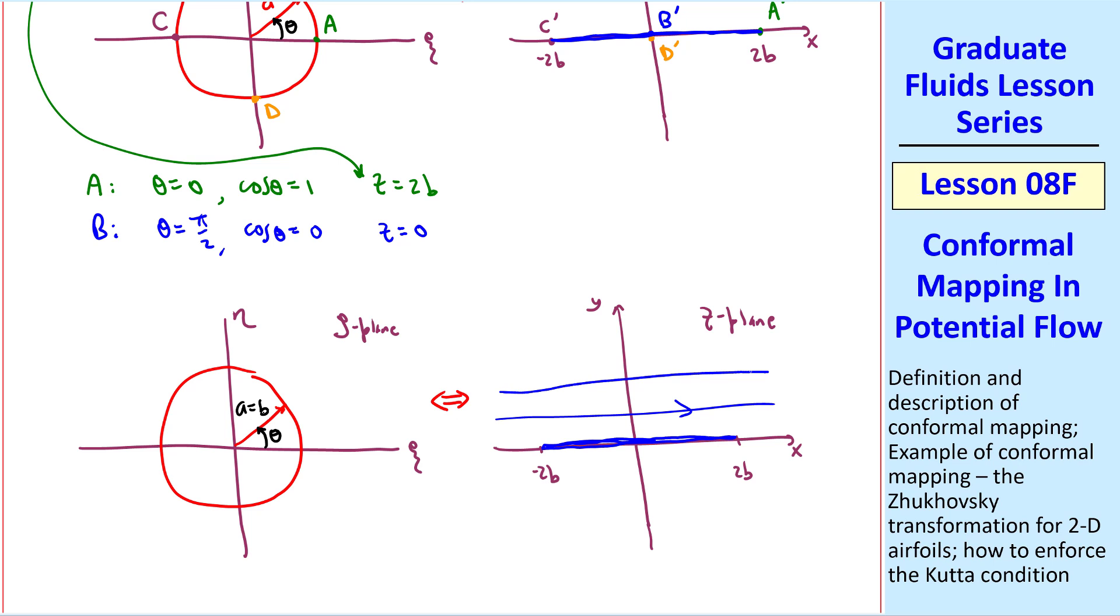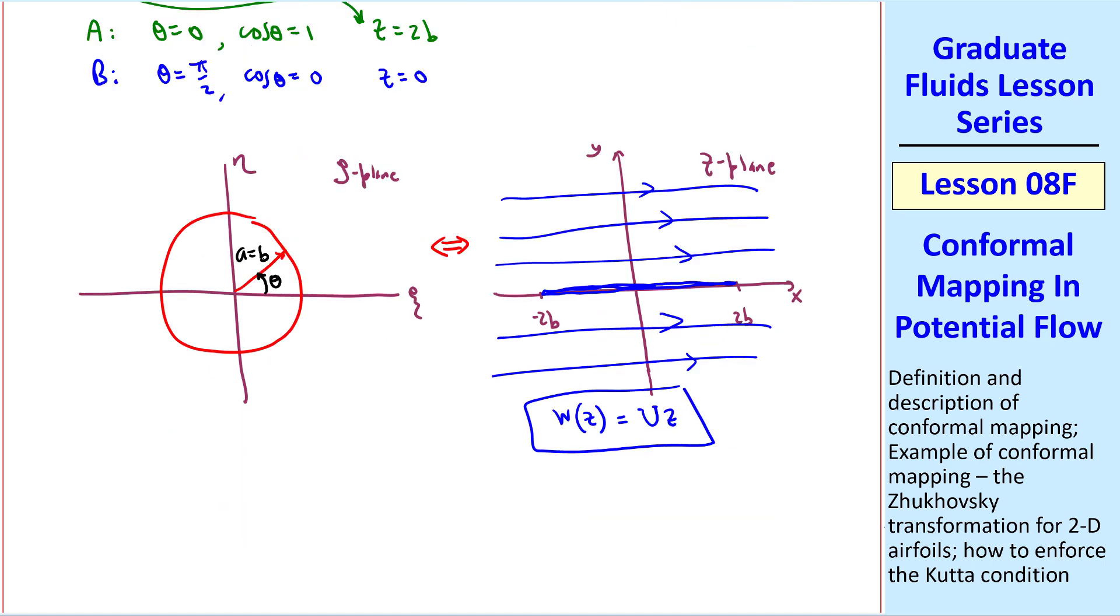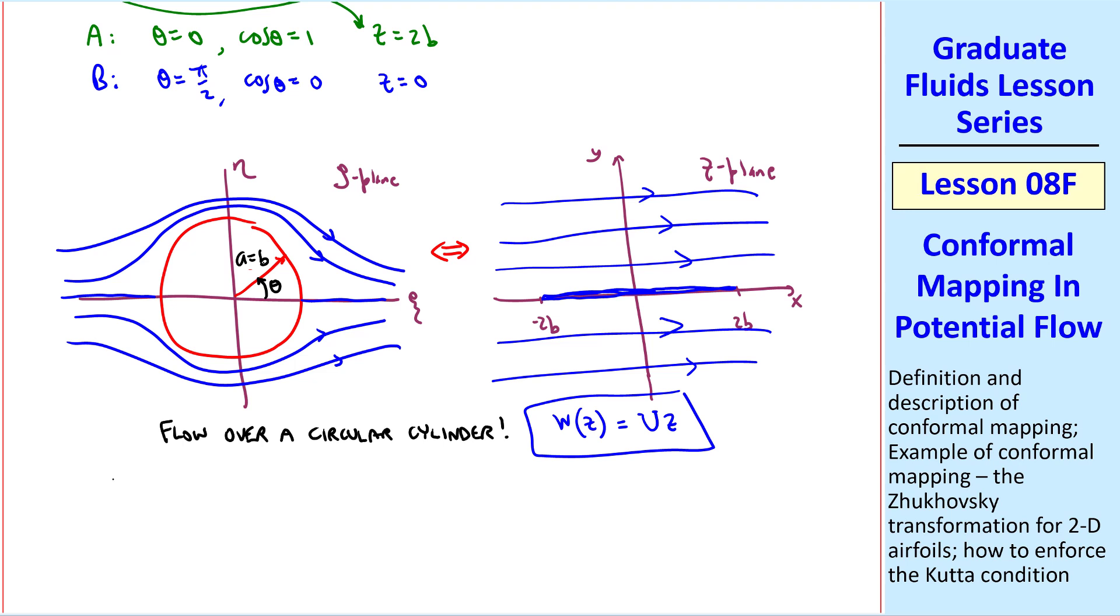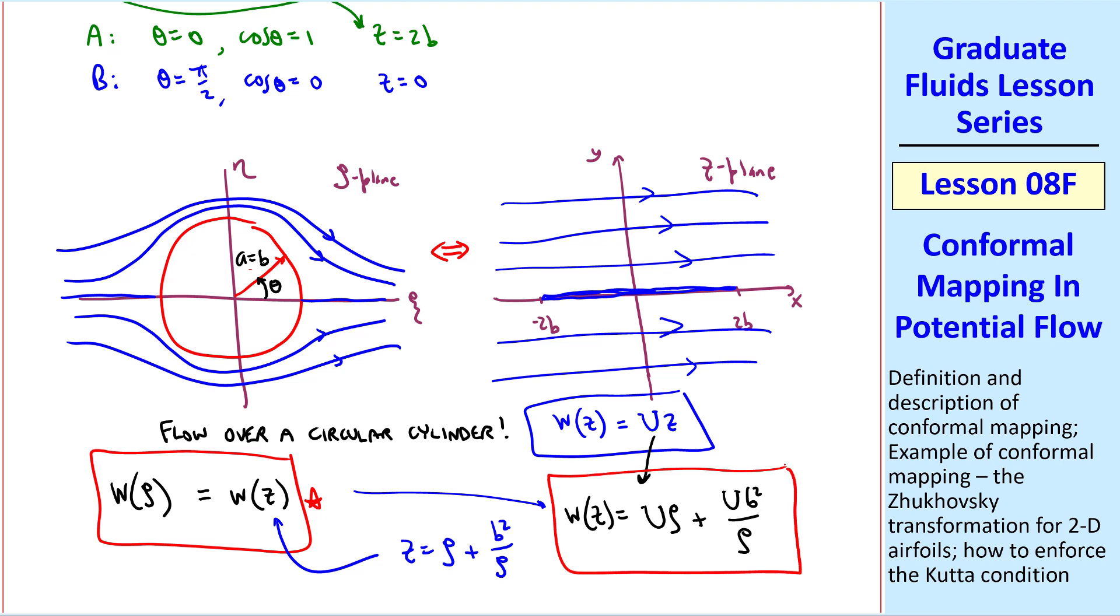What's really cool about this is that if we have a flow like a free stream flow in the z plane, which are just horizontal streamlines, where our complex velocity from a previous lesson is just w equals u times z. If we map backwards into the zeta plane onto our circle, every point on this line maps to a corresponding point on the circle. The streamlines also map and they look something like this, which is flow over a circular cylinder. Mathematically, the complex potential in the zeta plane w of zeta must be the same as the complex potential in the z plane. This is the key to conformal mapping.